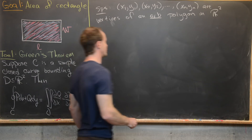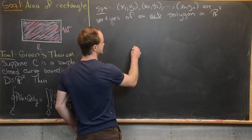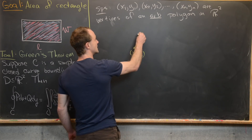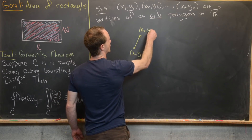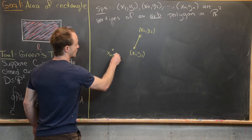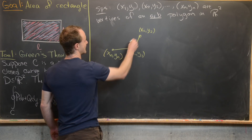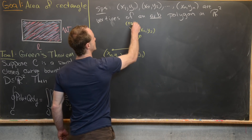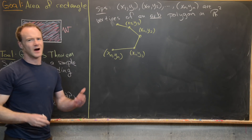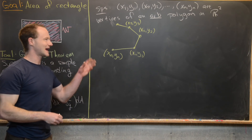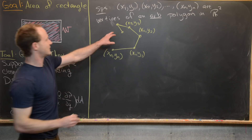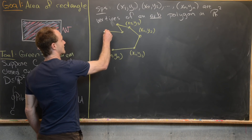The picture to keep in mind is: maybe this is the first point X1,Y1, the second point X2,Y2, before X1,Y1 you'd have XN,YN, and then X3,Y3 and so on. This polygon doesn't have to be convex — it can kind of bow back in — but it can't have any self-intersections. That's the important thing.